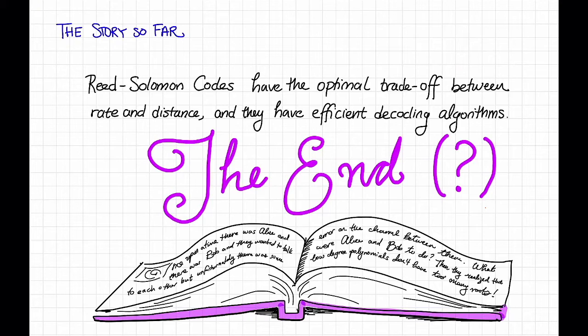However, there is one major downside to Reed-Solomon codes, which is the large alphabet size.